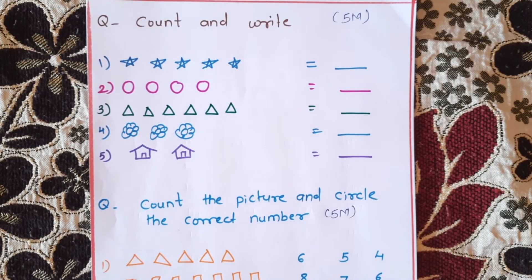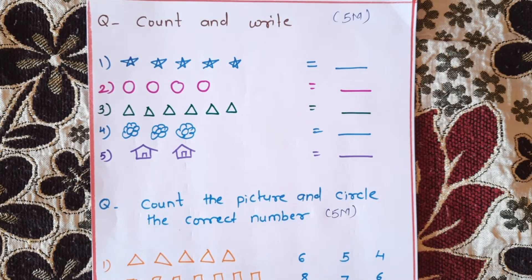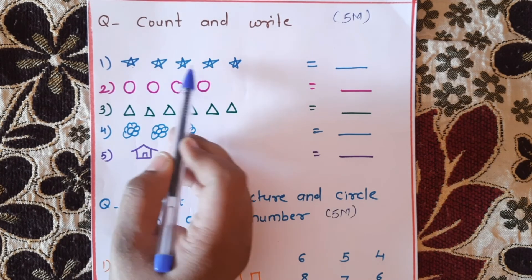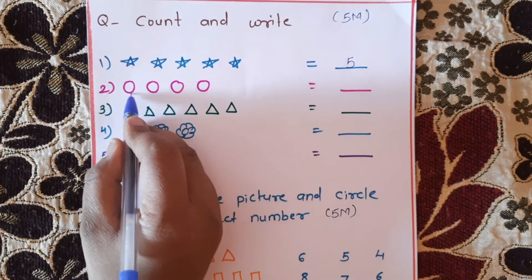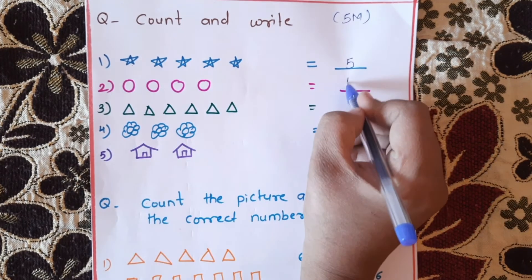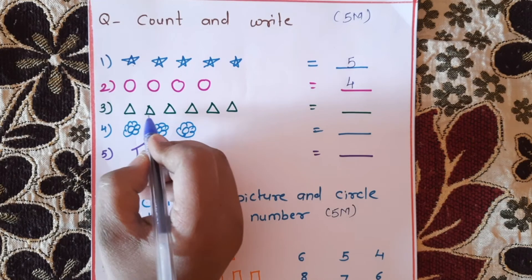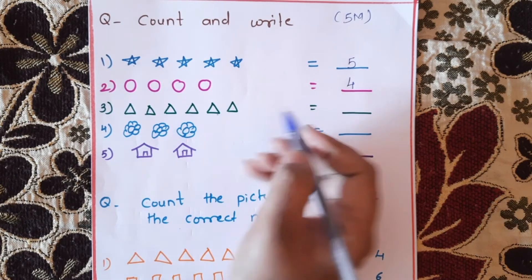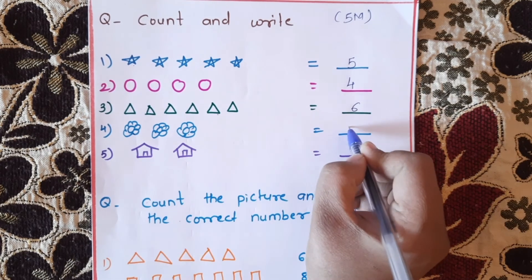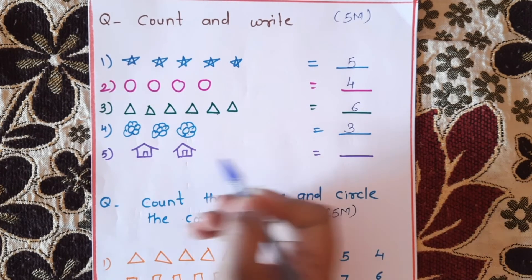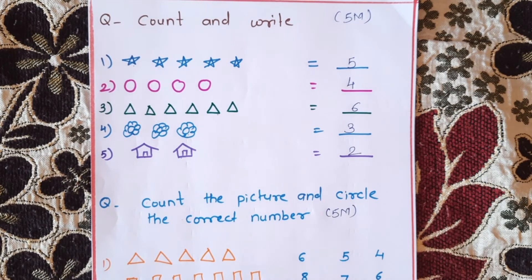The next question is Count and Write. If you have pictures, you can find the number of items. Count: 1, 2, 3, 4, 5. Next: 1, 2, 3, 4. Next: 1, 2, 3, 4, 5, 6. Next: 1, 2, 3. This is a total of 5 questions, 5 marks — 30 marks.